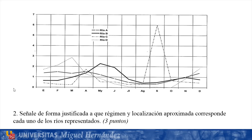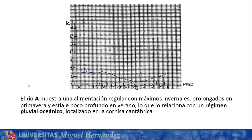The second question asked us to indicate, in a justified way, what regime and approximate location each of the represented rivers corresponds to. River A shows regular feeding with winter maximums that extend into spring, and a shallow low-water period in the summer months. This relates it to a pluvial oceanic regime located on the Cantabrian coast.